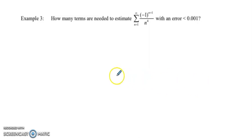Okay, we've got two practice problems for the alternating series estimation theorem. The first one says how many terms are needed to estimate this series with an error of less than 0.001.